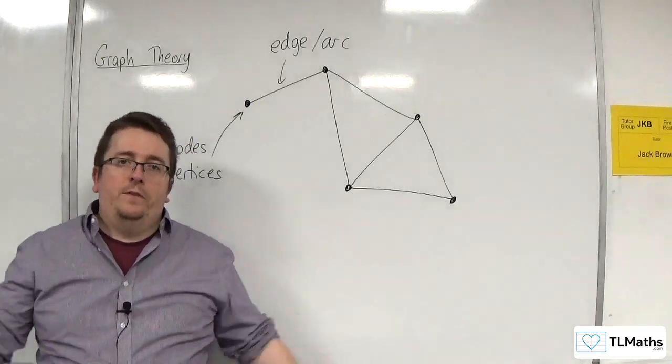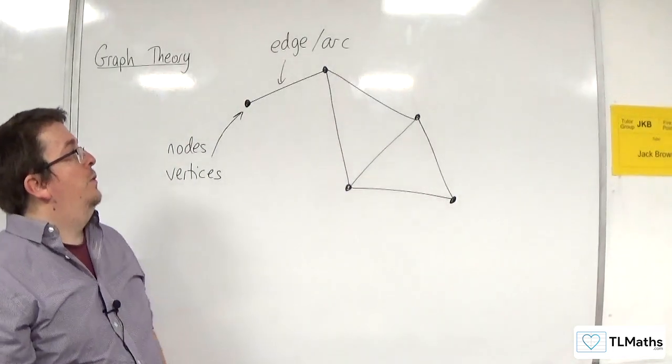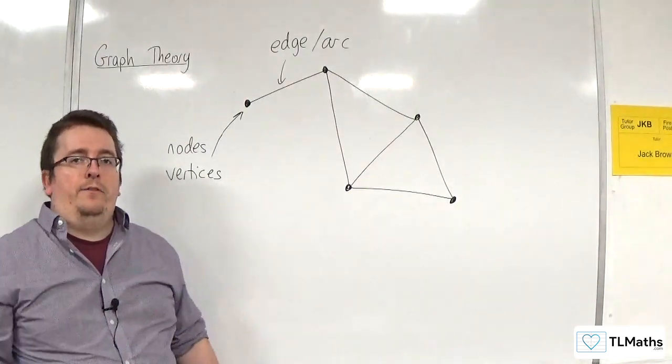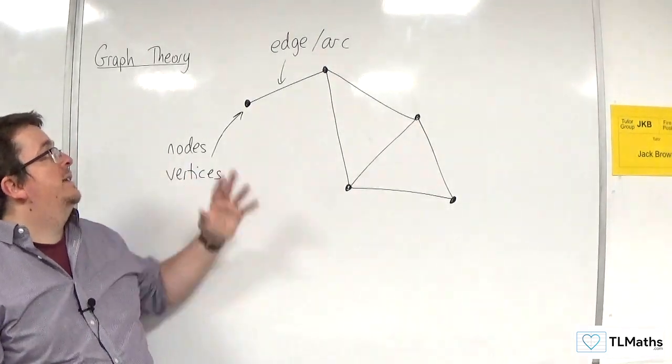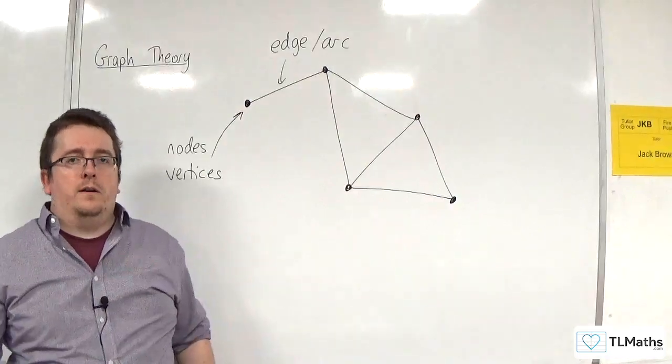So this is a graph, and they're made up of nodes or vertices and edges or arcs.